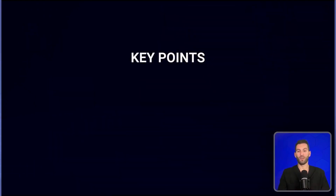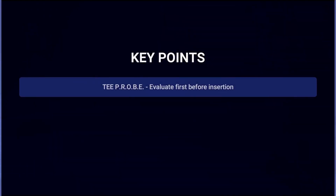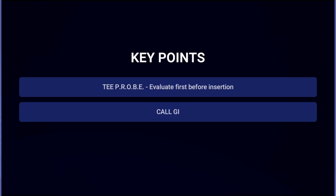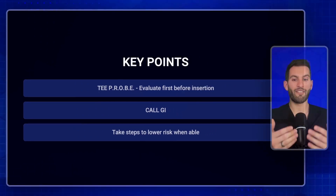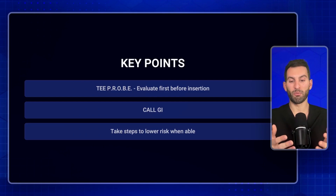The key takeaways from this episode are: evaluate first before insertion using the acronym TEE PROBE — a simpler alternative to sifting through all absolute and relative contraindications. When in doubt, call GI; have their number on speed dial. They are tremendously helpful at advising and even scoping to determine the safety of TEE probe placement. When able, take steps to lower risk: consider alternative options, pre-procedure assessments, careful insertion and manipulation technique, and maintain a level of suspicion after removal for any residual problem.